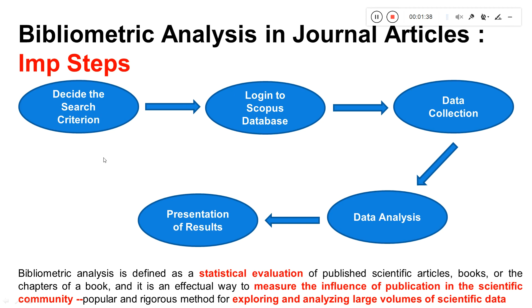Deciding the search criterion is your first important step. You need to decide what you want to search and how you will search it. For example, in my own paper on microplastics, I needed to decide on what particular topic to draw a graph to show the importance of the study. We decided the topics would be microplastics, its toxicity, and how many papers have been done in this field.